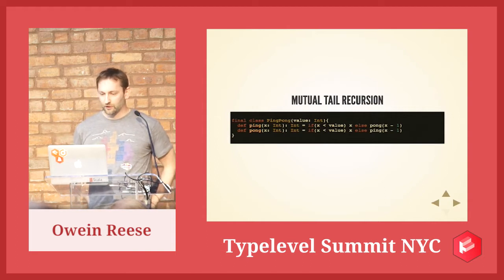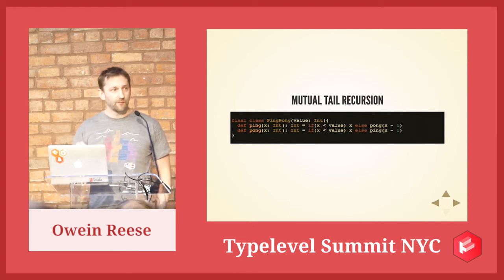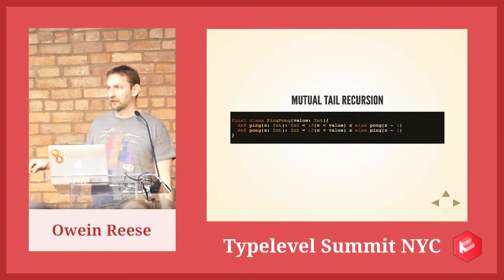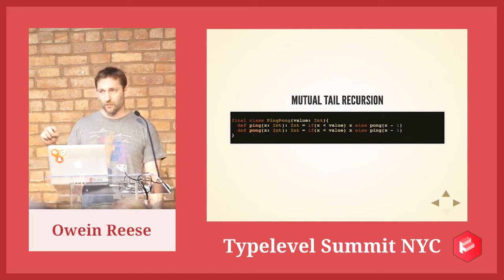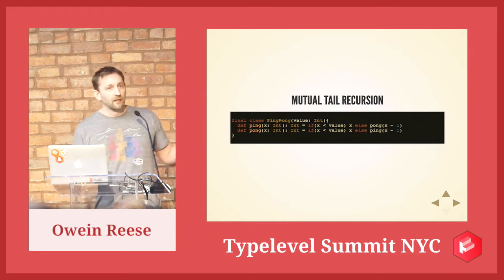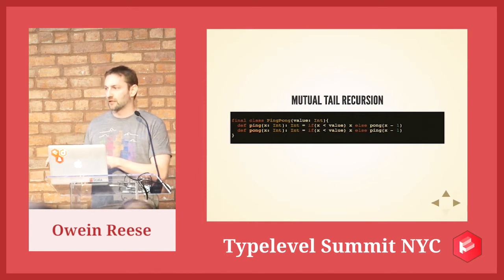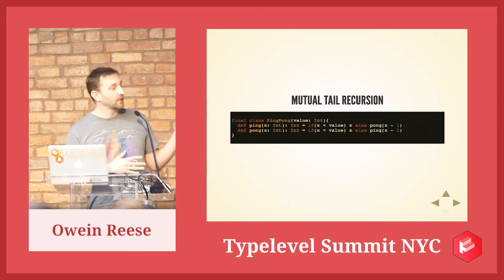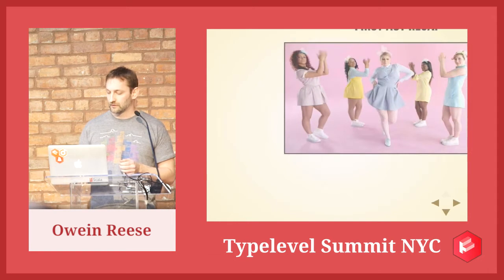Mutual tail recursion — in this case there's a pong in that ping and there's a ping in that pong. If you loop through this, it'll go ping pong, ping pong, ping pong, right until it blows the stack. It's kind of like playing ping pong in a minefield. These calls are in tail call position, but Scala itself can't do any sort of transformation to save you from it. And so that's why I wrote this plugin — because that's exactly what it does. It allows you to have mutual tail recursion.